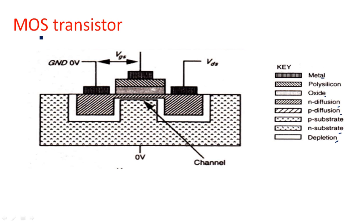MOS transistor — MOS stands for Metal Oxide Semiconductor transistor. It is quite different from the Bipolar Junction Transistor or Unipolar Junction Transistor that you have studied in second year of engineering. The MOS transistor is an advanced version of transistor design where several layers are included to create a low power device.